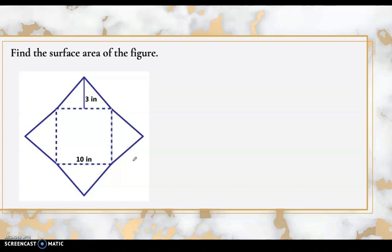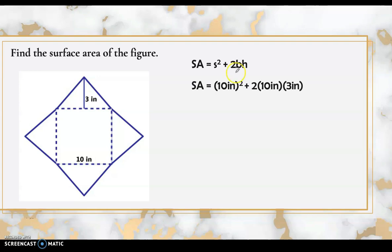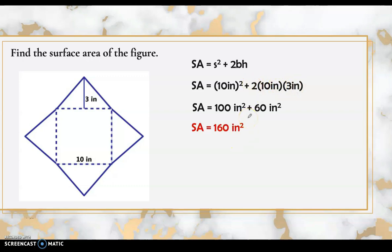Next, we have the net of a square pyramid with a side of 10 inches and a slant height of 3 inches. Using SA = s² + 2bh: substitute 10² + 2(10)(3) = 100 + 60 = 160 square inches. The surface area of this figure is 160 square inches.